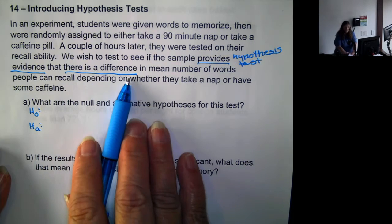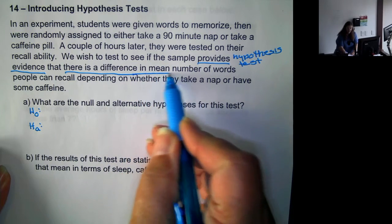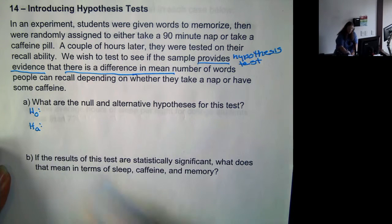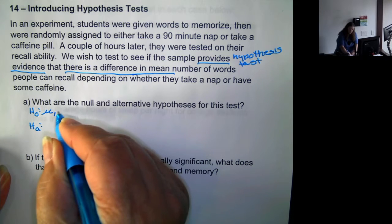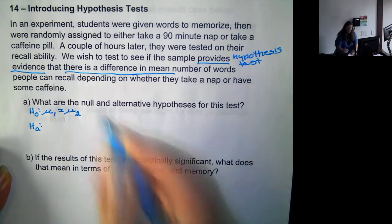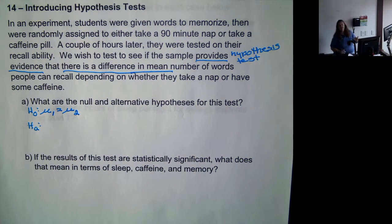Now, we want to see if there is a difference in mean number of words. So, it's mean, and we have two groups. So, it's μ₁ = μ₂. The null hypothesis is always that they are equal. There's no difference in them. There's no change.